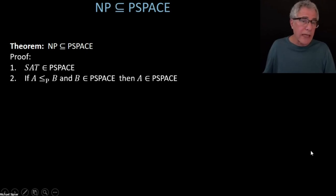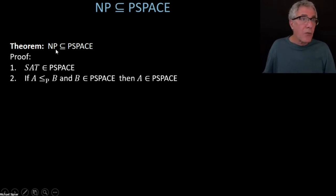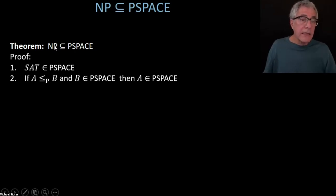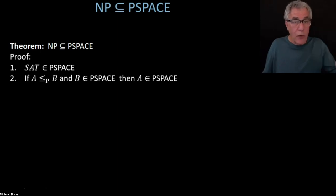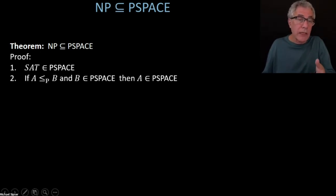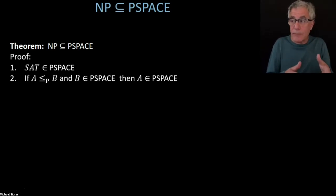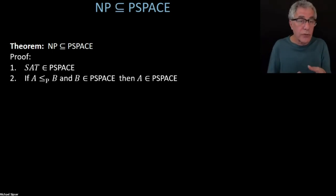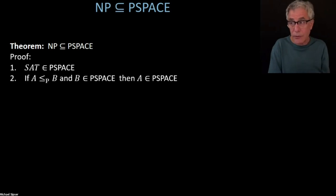You could also prove this more directly: take a language in NP that has a non-deterministic polynomial time algorithm, and give a deterministic polynomial space algorithm that simulates that NP algorithm by going through all different branches but reusing space — not using new space every time you go through a different branch. You can arrange this with a little care. So you could give a direct simulation in polynomial space of any NP Turing machine. But I think the completeness-based argument is more elegant.